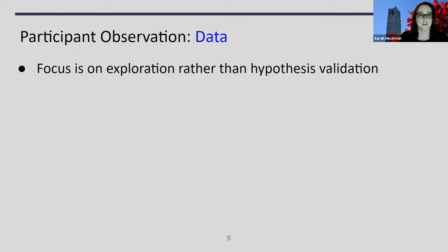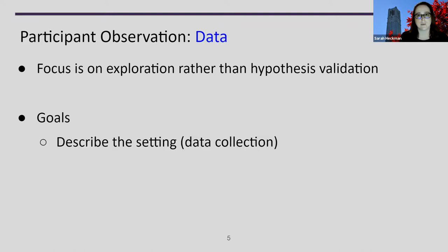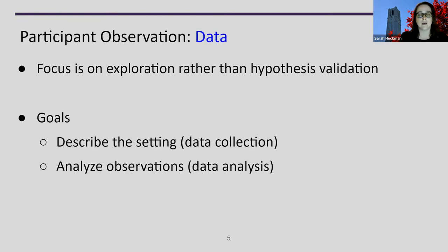When doing participant observation, we want to focus more on exploration than on hypothesis validation. Participant observation allows us to really explore a particular situation; we don't use it to validate a hypothesis. It's really getting towards grounded theory. The goals are to describe the setting — what's happening, what we're observing. For example, is subject A talking to subject B? If they're doing pair programming, who is the driver and who is the navigator? We then do analysis using counting and other techniques to identify the how and the why of a particular situation.